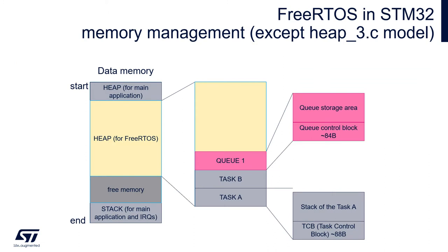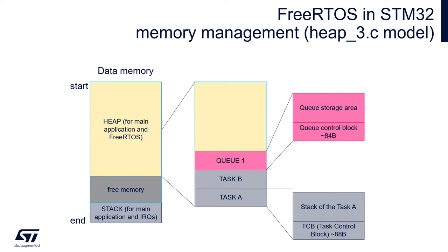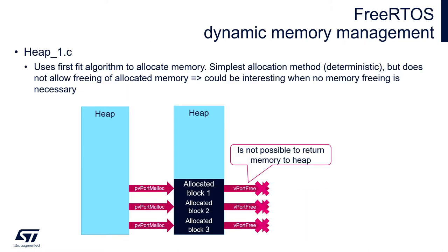In the majority of memory management schemes, the FreeRTOS heap is located on a free RAM area outside of the existing stack and heap areas of the MCU. The only exception is the heap3 model, where we have full control on memory allocation by creating our own linker file and our own methods to allocate and release memory.